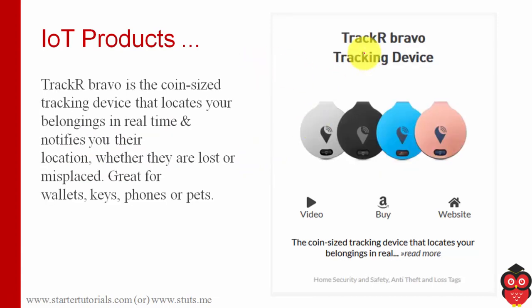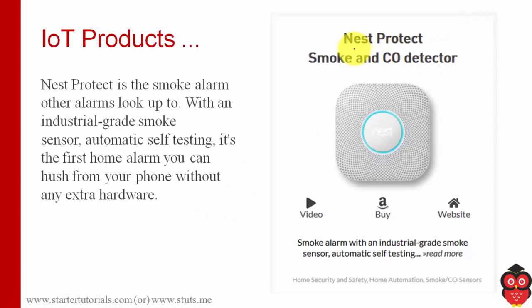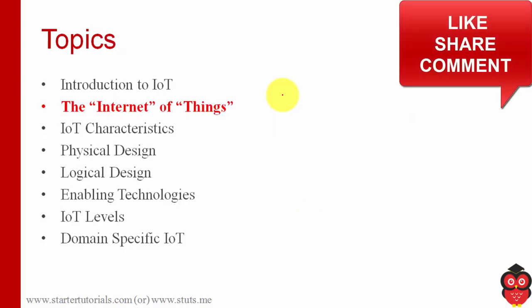Another product is a tracking device called Trackr Bravo. It's a small device you can attach to objects like wallets, keys, or phones, or put around the neck of your pets. Wherever the object is, you can see its location in the app on your mobile phone. The next product is a smoke and CO detector. You install it in your home and can see readings for smoke or carbon monoxide from any location, and receive alarms.